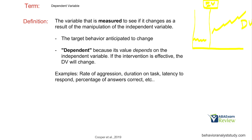The dependent variable, or the behavior, is dependent on our intervention — it's really common sense if you think about it. The client's behavior is dependent on your treatment plan. The treatment plan is the independent variable; the client's behavior is the dependent variable. If the intervention is effective, the dependent variable is going to change. Examples include: rate of aggression, duration on task, latency to respond, and percentage of answers correct. Notice all of these are some sort of measurement system because we're measuring the dependent variable — we need to define it and choose what we're measuring.